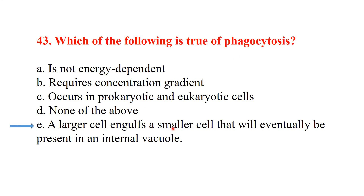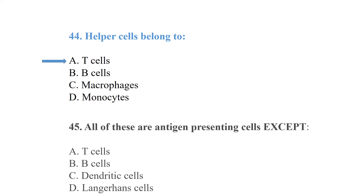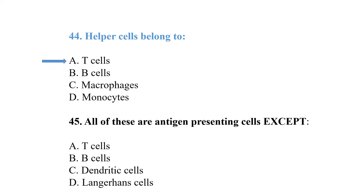Regarding phagocytosis: a large cell engulfs a smaller cell that will eventually be enclosed in an internal vacuole. Helper T cells belong to the T cell category.